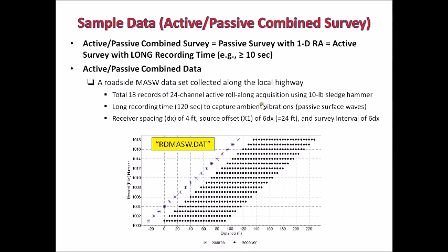So it was basically an active survey to generate two-dimensional velocity cross-section at the end, but the only difference was it adopted a long recording time of 120 seconds. So the recording was triggered by this active source of 10-pound sledgehammer, but it continued for much longer time than normally used in active survey so that it can capture ambient vibrations, which basically consist of passive surface waves. In that sense, this is called active-passive combined survey.